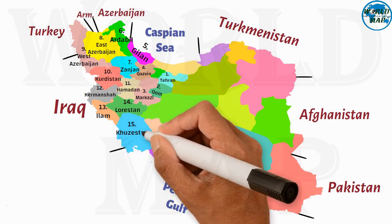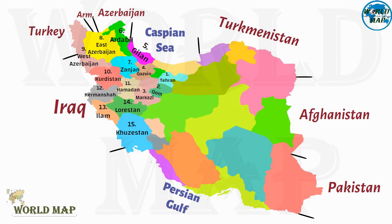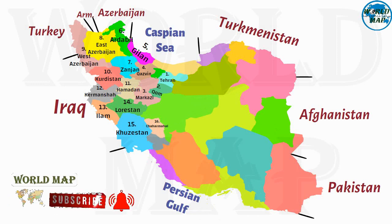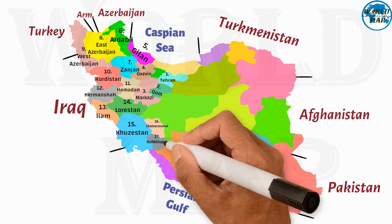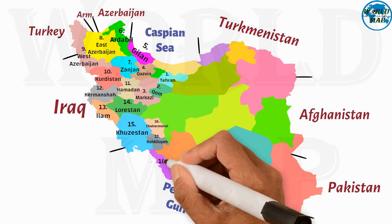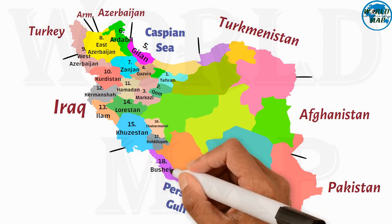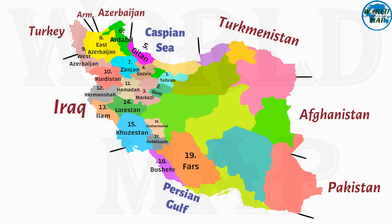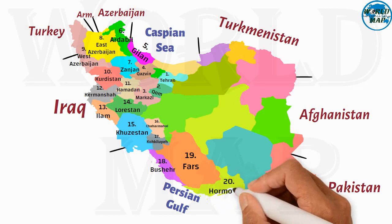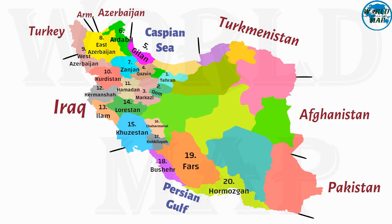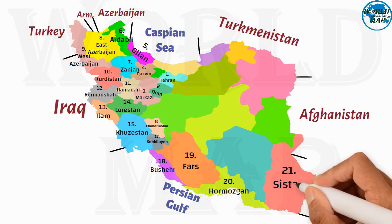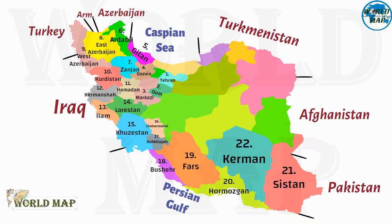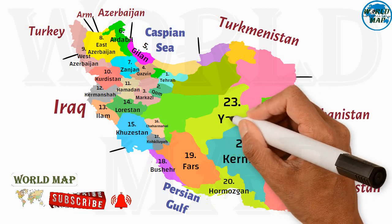Number 15: Khuzestan. Number 16: Chaharmahal. Number 17: Kohgiluyeh Boyer-Ahmad. Number 18: Bushehr. Number 19: Fars. Number 20: Hormozgan. Number 21: Sistan.